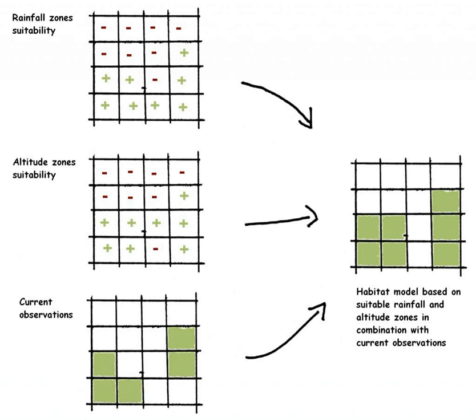Disagreement in the literature exists over whether environmental niche models portray the realized niche, which is determined by biotic and abiotic constraints, or the fundamental niche, which is determined by abiotic constraints.